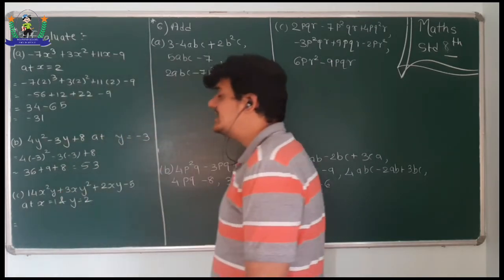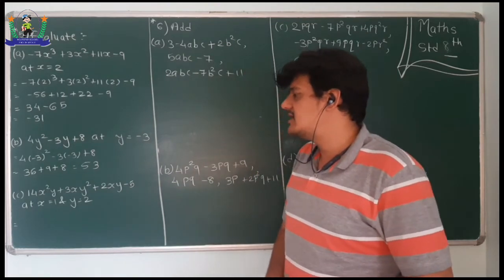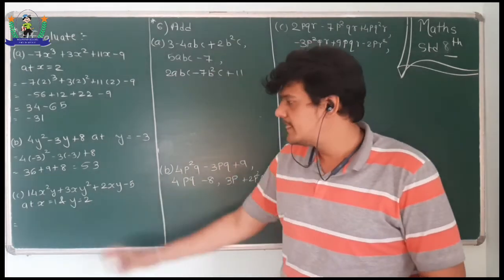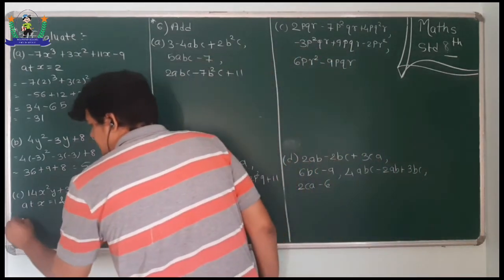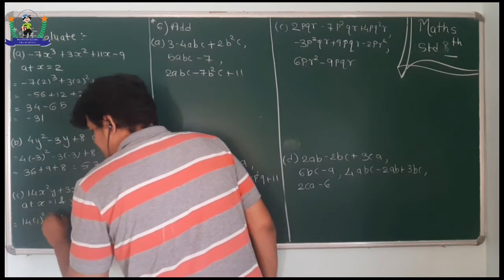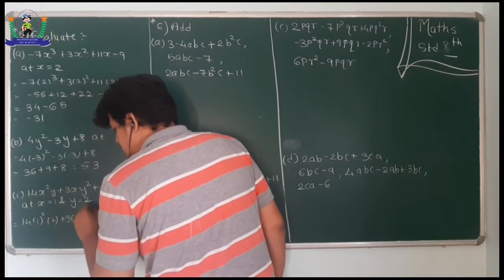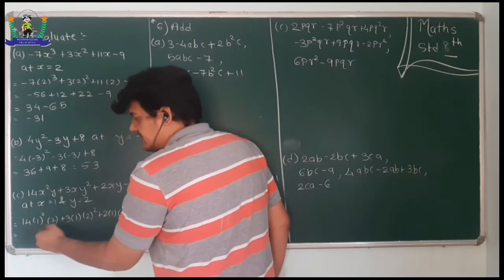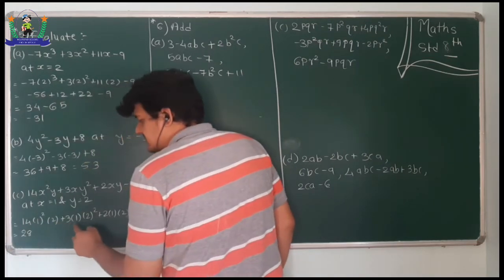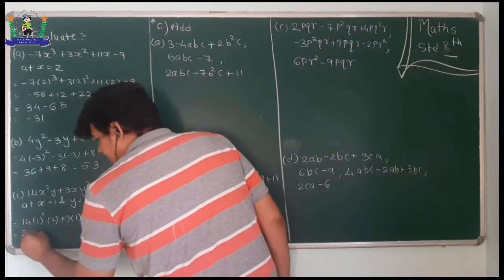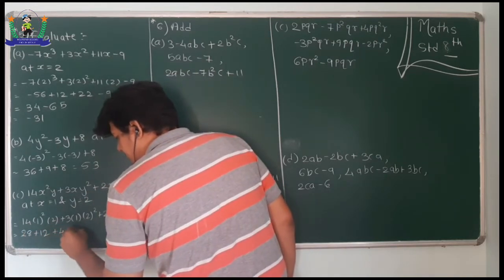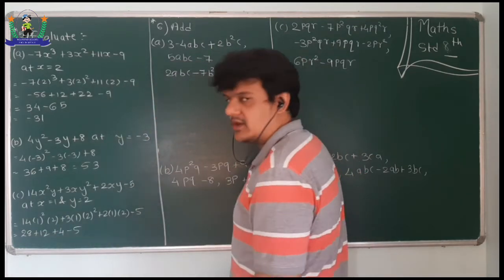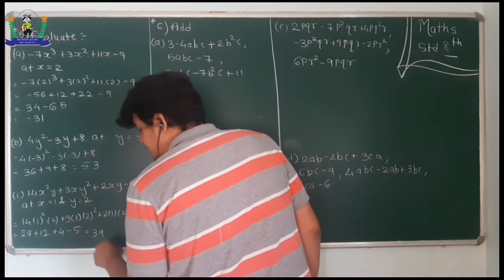Moving to the next one: 14x²y plus 3xy² plus 2xy minus 5, where x equals 1 and y equals 2. Substituting: 14 into 1 square into 2 plus 3 into 1 into 2 square plus 2 into 1 into 2 minus 5. That gives 28 plus 12 plus 4 minus 5, which equals 39. Seems simple!